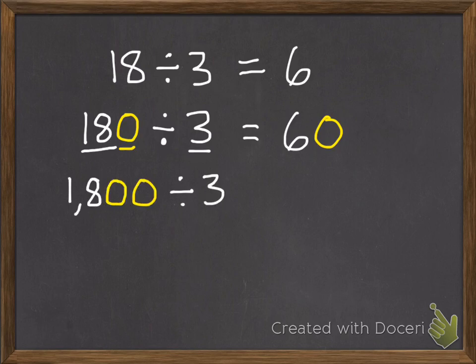If there are two 0s, 18 divided by 3 is still 6, but it's 100 times greater, so it's going to be 600.